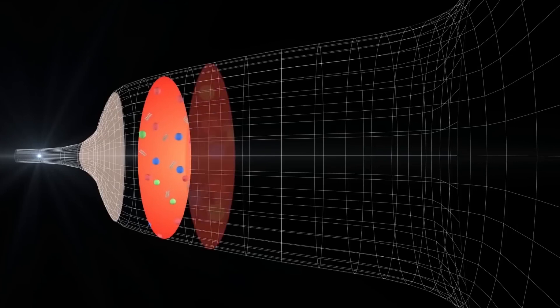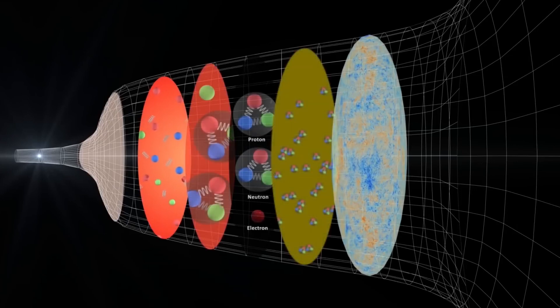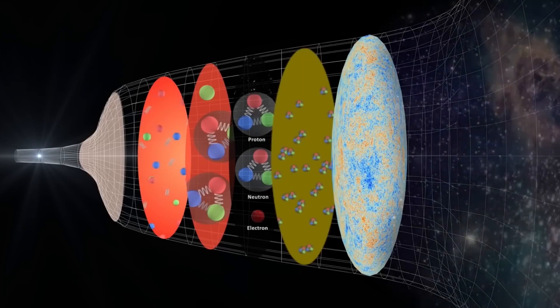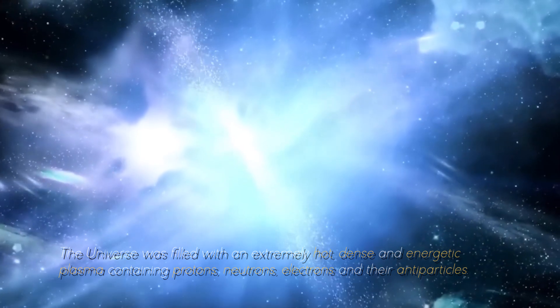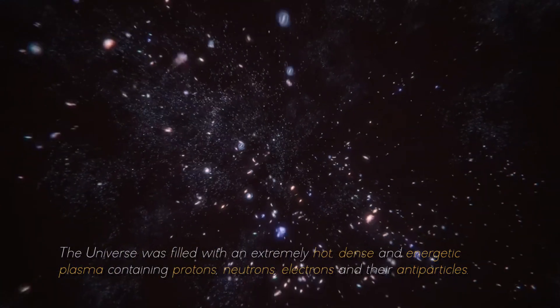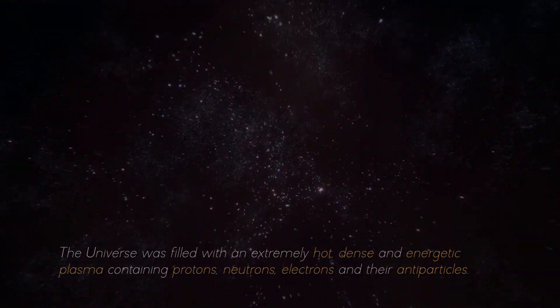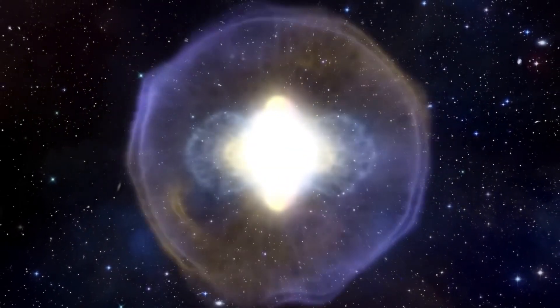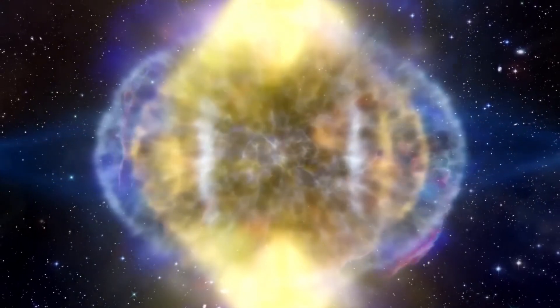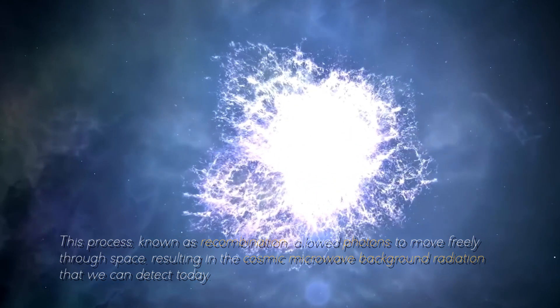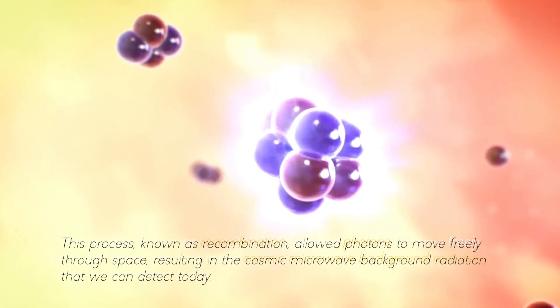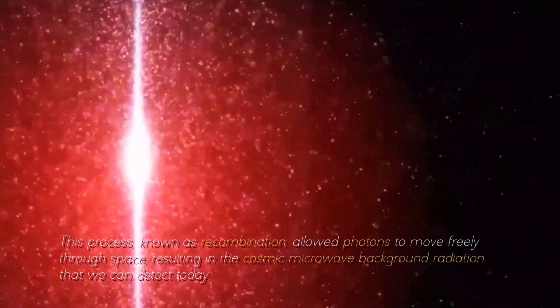During the first few seconds following the Big Bang, the singularity experienced a massive release of energy. The universe was filled with an extremely hot, dense, and energetic plasma containing protons, neutrons, electrons, and their antiparticles. As the universe cooled due to its expansion, the temperature dropped enough to allow electrons to bond with protons and form neutral atoms. This process, known as recombination, allowed photons to move freely through space, resulting in the cosmic microwave background radiation that we can detect today.